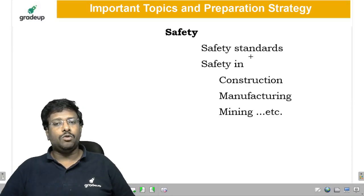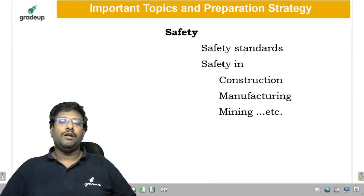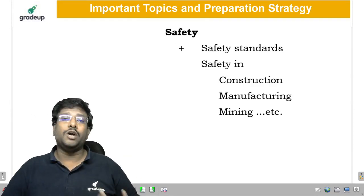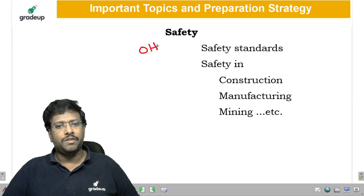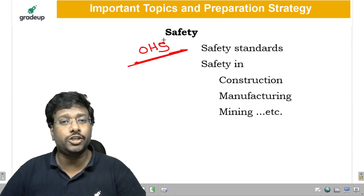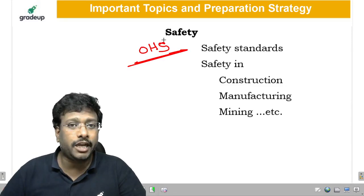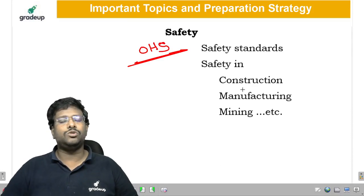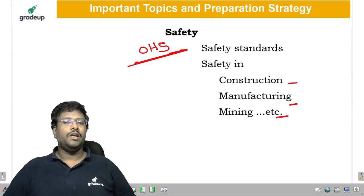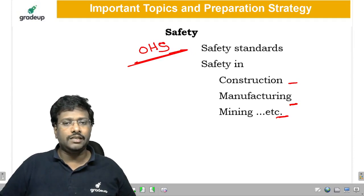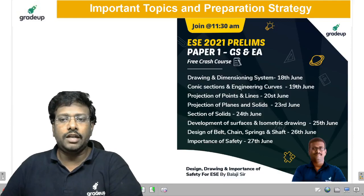Now moving on to safety. When working in an industry, if the owner does not take care of employees, there is a huge loss to the employee and a negative impact on society. That is why the government and various organizations run programs on occupational health and safety (OHS). We need to know which industries fall under OHS, what safety precautions are given, what standards are used, and what safety elements apply to construction, manufacturing, mining, and other industries.